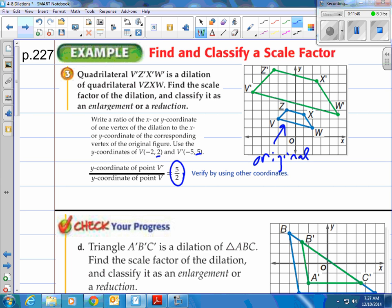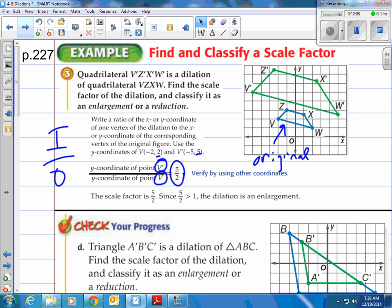You have 5 over 2. The way to remember this is take the second image or the image, which is the prime image, and put it over the original. So image over original. You might want to remember that. Image over original will get your scale factor. So in this case, the scale factor is 5 over 2. And since 5 over 2 is greater than 1, that's 2 and a half. The dilation is an enlargement, which you can kind of see by the picture. But if you didn't have the picture and you just had a scale factor, you can see that's going to be an enlargement because it's greater than 1.